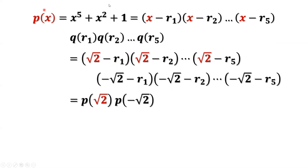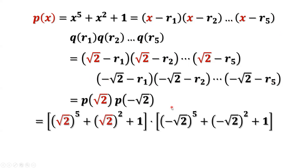To use the given condition, recall that p of x equals x minus R1 times x minus R2 through x minus R5. Just replace x by positive square root of two to get the first group, which equals p of square root of two. Replacing x by negative square root of two gives the second group, equal to p of negative square root of two.